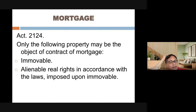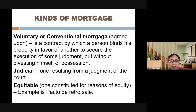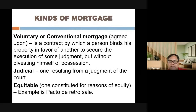The objects of mortgage are immovable property — real property, land, buildings, and legal rights in accordance with laws imposed upon immovables. Rights arising from real property can also be subject to mortgage. The kinds of mortgage are: voluntary or conventional, where parties agree; judicial, resulting from a court order; and equitable, constituted for reasons of equity, such as a pacto de retro sale or deed of sale with right of repurchase.